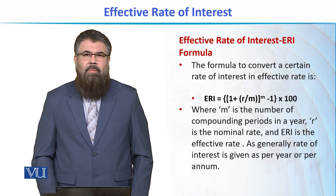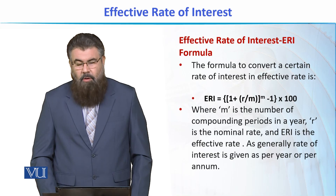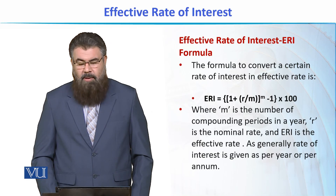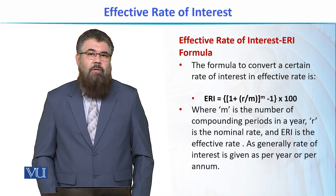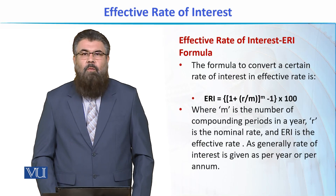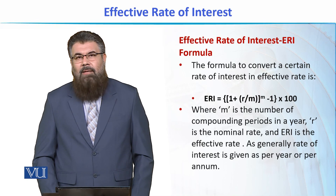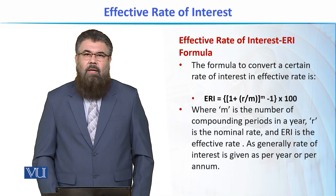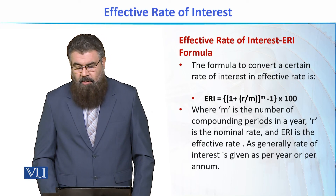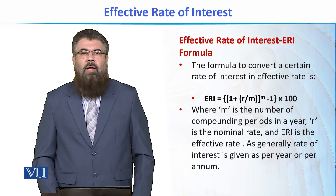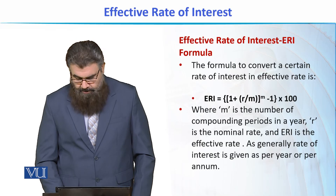If we go to shorter time periods, we will have more and more compounding periods. Using this formula, we divide the nominal rate of interest R by the number of compounding periods M, add 1, then raise the whole expression to the power M. We then subtract 1 to get only the interest element we want. Ultimately, we get an answer in percentage — for example, 10.43%.